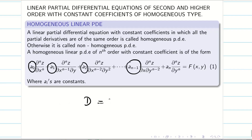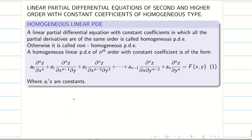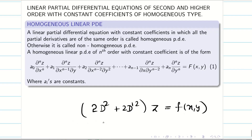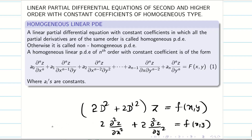We use the notation D for ∂/∂x and D' for ∂/∂y. An example of a second order linear PDE with constant coefficients of homogeneous type is: (2D² + 2D'²)z = f(x, y), which can also be written as 2∂²z/∂x² + 2∂²z/∂y² = f(x, y).